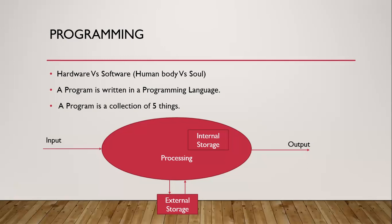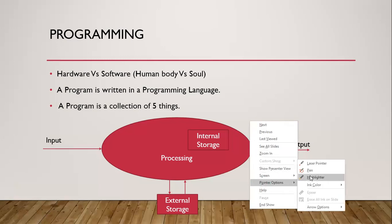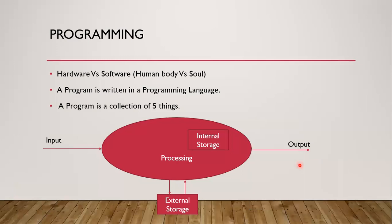A software is a program, and a program is written in a programming language. A program is a collection of five things shown on this slide: input, output, internal storage, processing, and external storage.